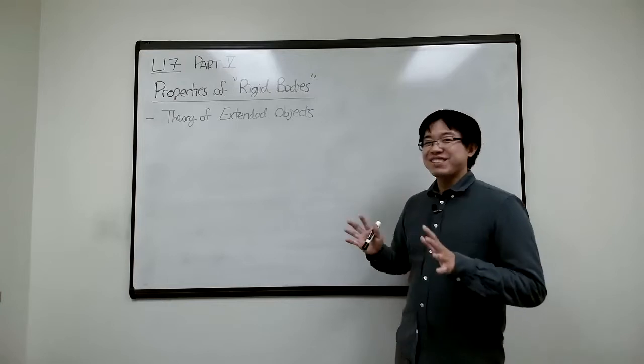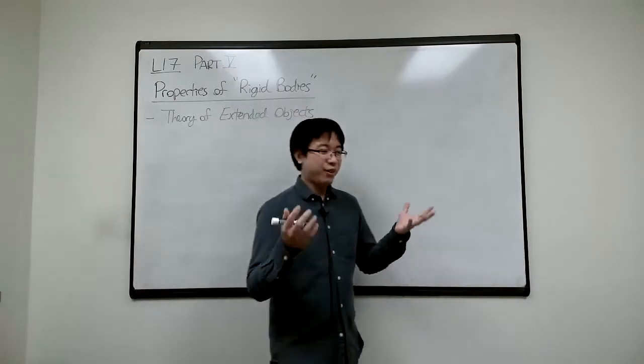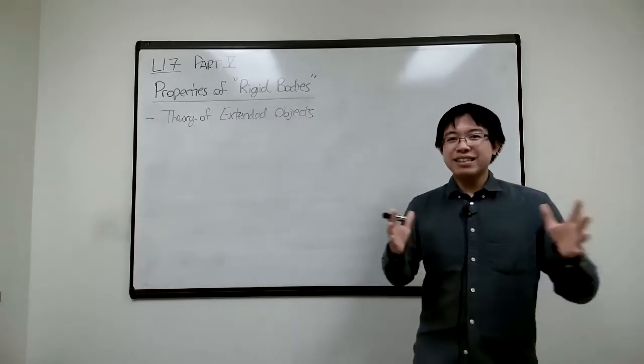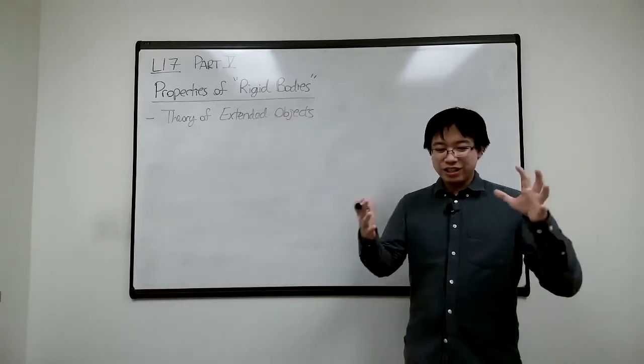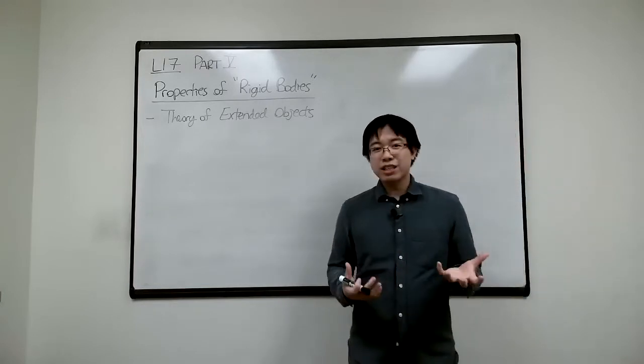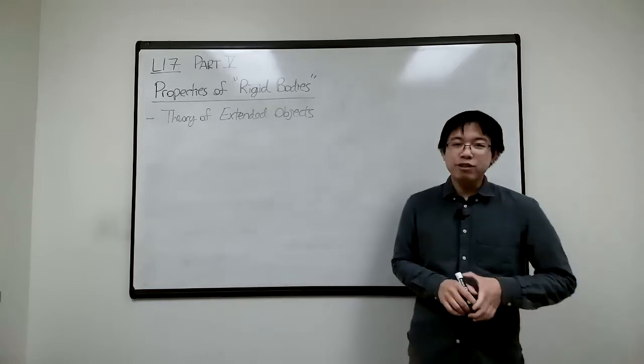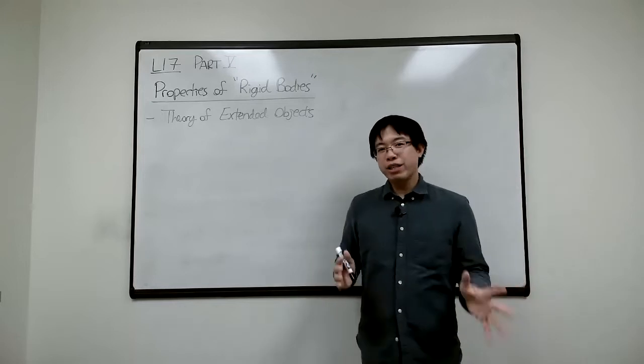So it just means now we have extended objects with some shape, and it's not elastic. A basketball or football is not a perfect rigid body, and a rock is a pretty good rigid body. However, in the real world, there is no perfect rigid body.